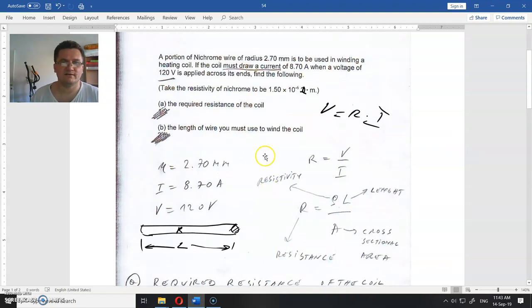but we do have the radius of this area. Because that is a circle, 2.7 millimeters - that is 0.0027 meters.